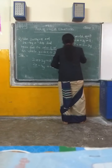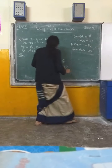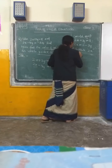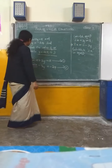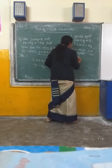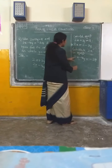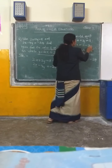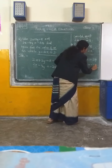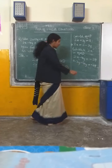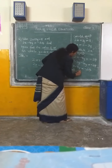Substitute 2x in equation number 2. Equation number 2 is 2x minus 4y equal to minus 24. Instead of 2x, substitute 11 minus 3y. So you get 11 minus 3y minus 4y equal to minus 24. Combining the y terms: minus 3y minus 4y is minus 7y. So you get 11 minus 7y equal to minus 24.